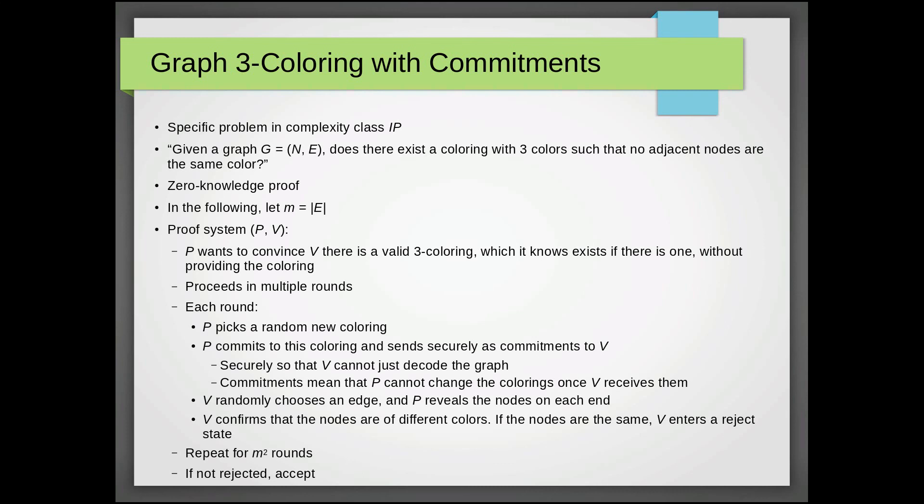So the computation proceeds in multiple rounds. What happens in each round is that first, P picks a random new coloring. It can't keep on reusing the same coloring because the way V operates, it could just slowly reveal every color in the graph, which would reveal the knowledge we don't want to give V.